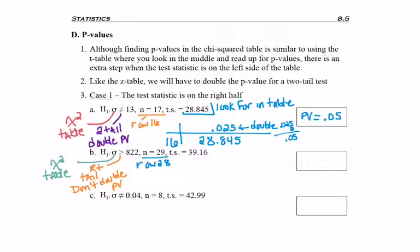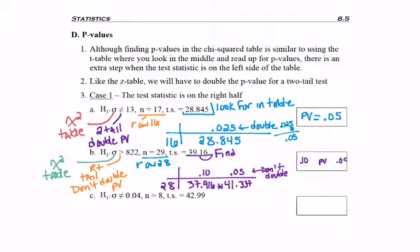I'll be going to row 28, which is in our table, and I need to find my test statistic. So in row 28, as I'm reading across from left to right, I see 37.916 and then 41.337. So my 39 number is not in the table, but it is in between two values that I see—greater than the 37 number but less than the 41 number. So I read up to the top of those, and remember I'm not going to need to double those numbers. I just know that my p-value is in between those values.